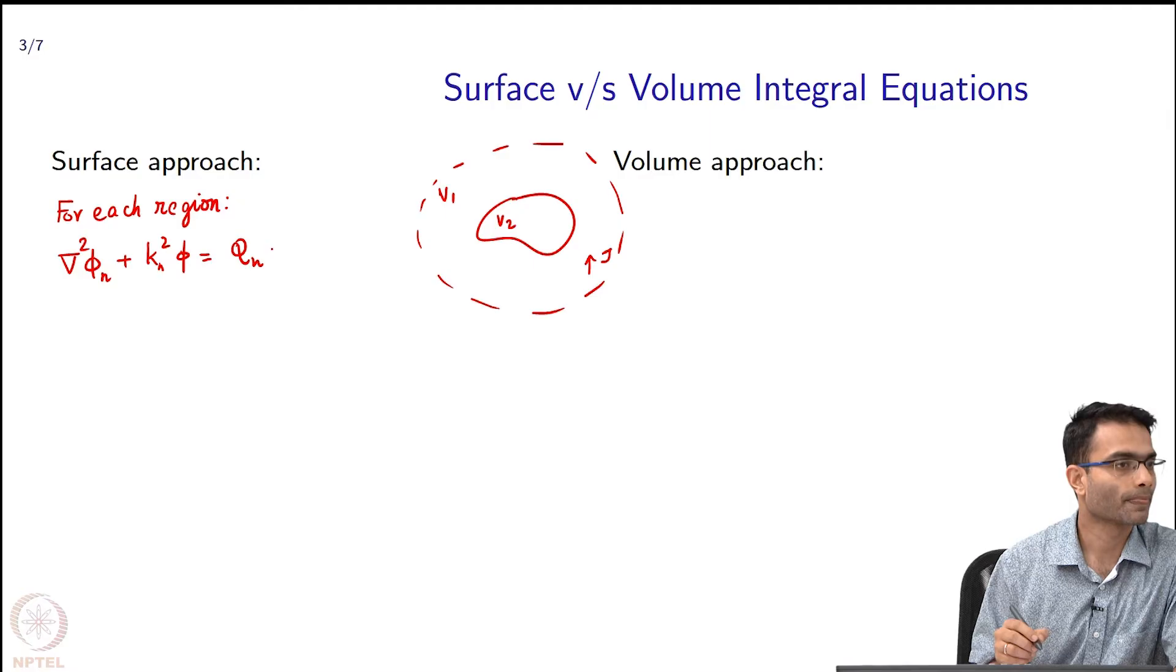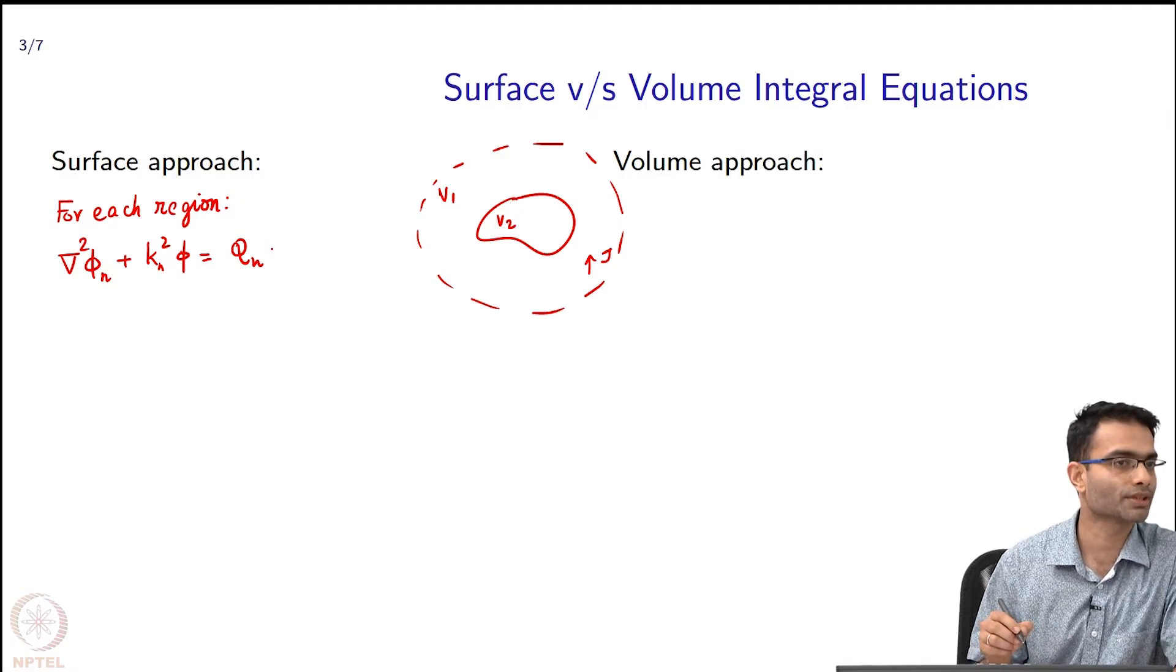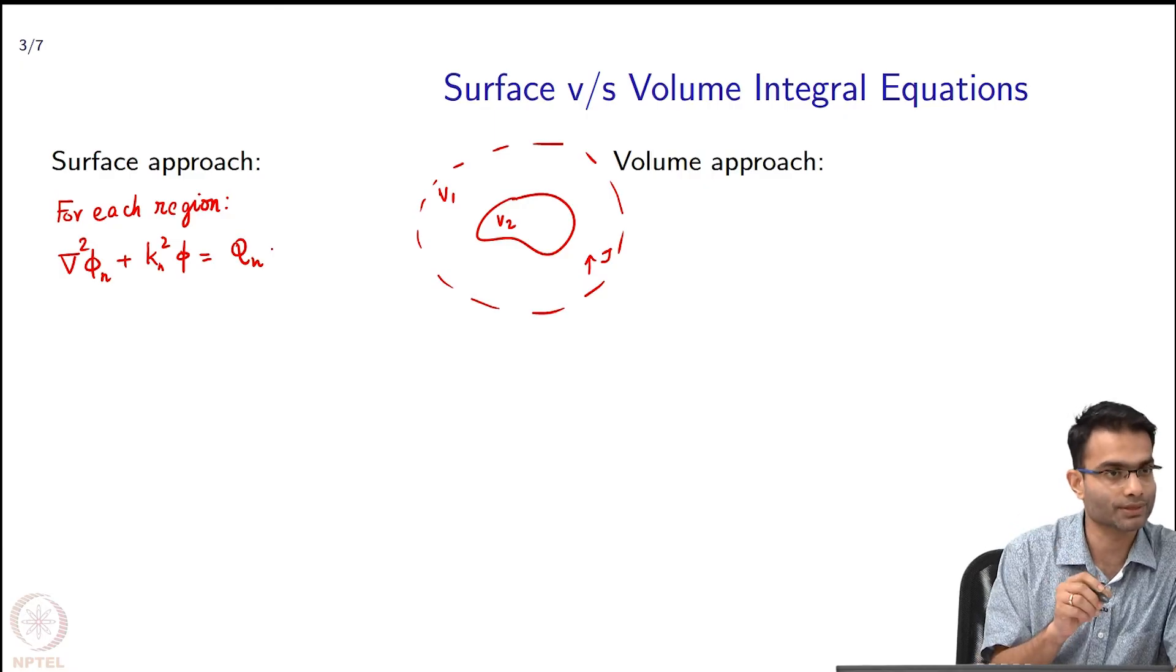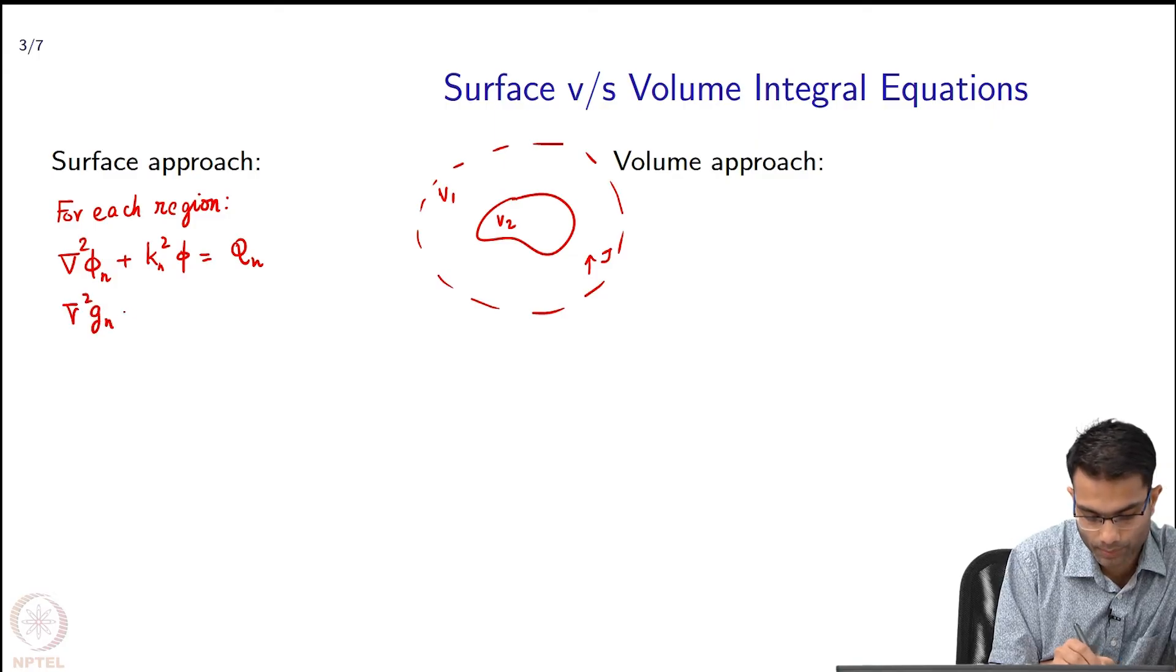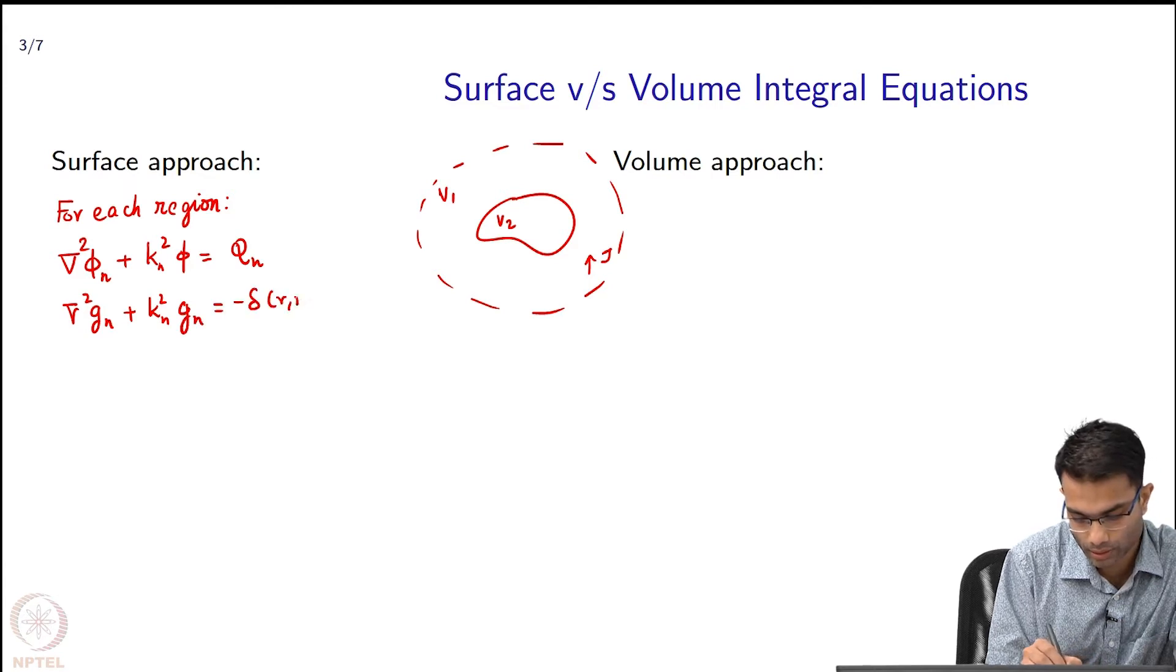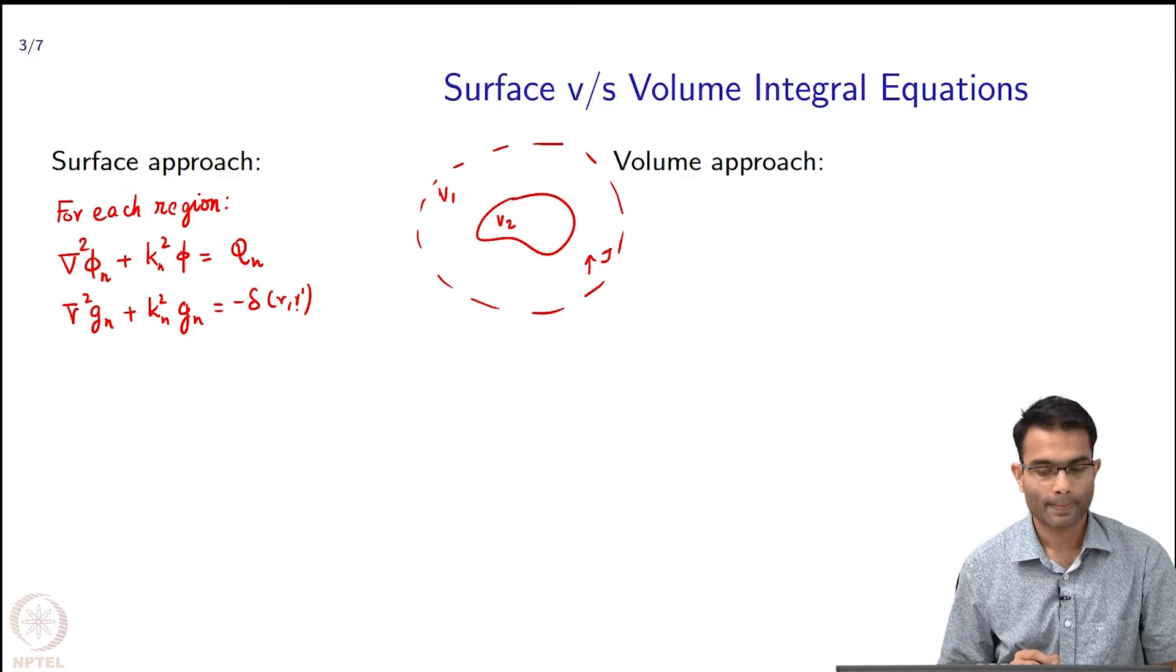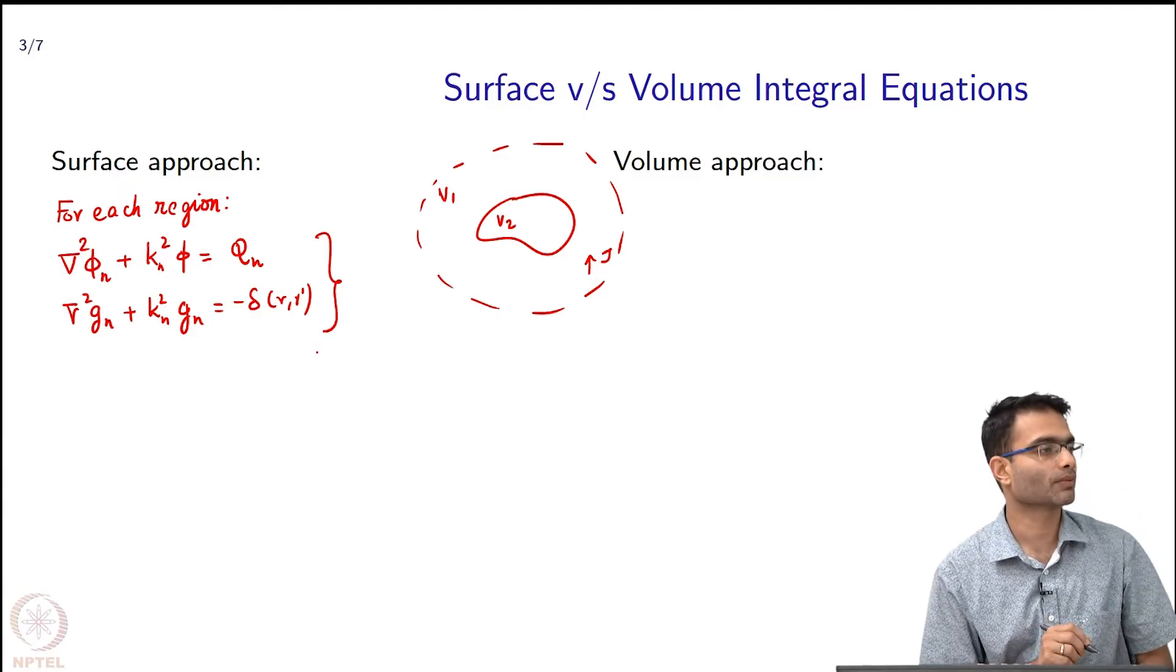What else did we do? Apart from writing this Helmholtz equation for each region, the other thing that I needed was Green's function for each region. So, ∇²gₙ + kₙ²gₙ is equal to δ(r,r') and with these two equations what did I do then?